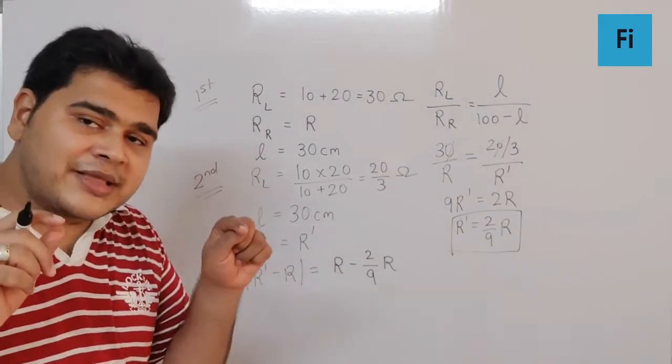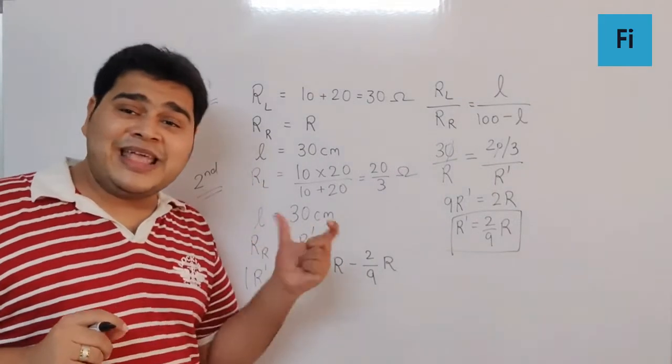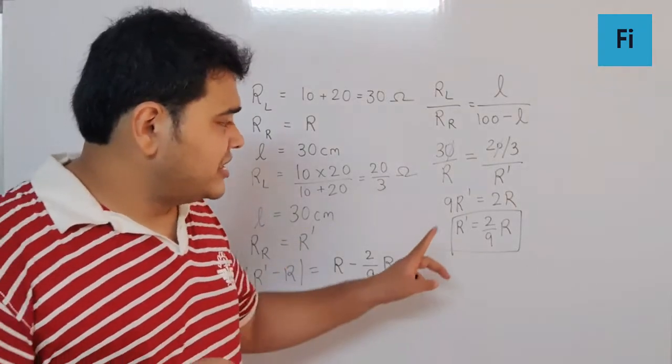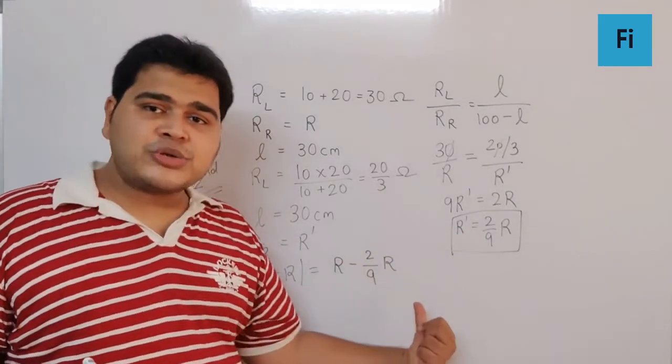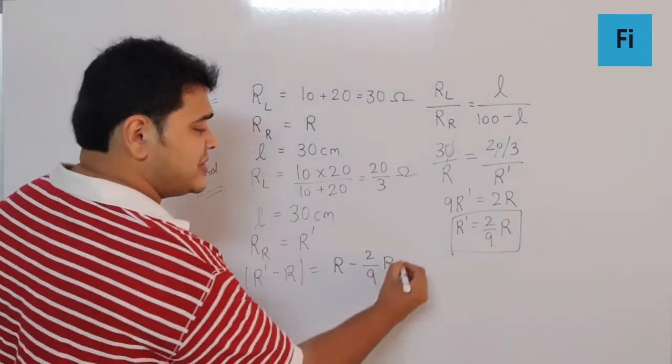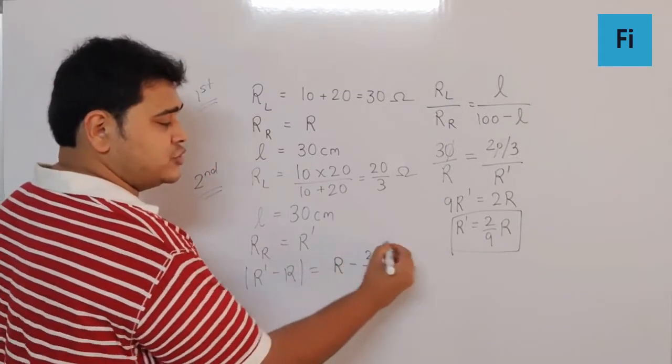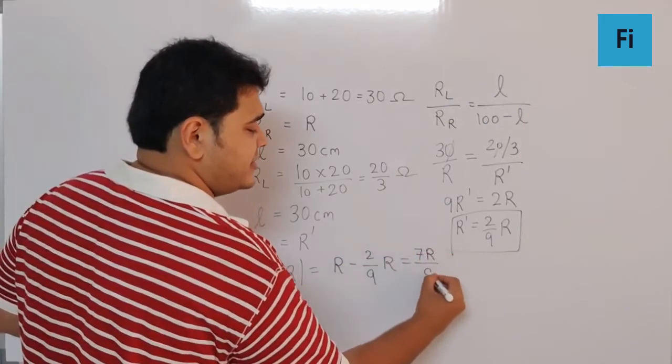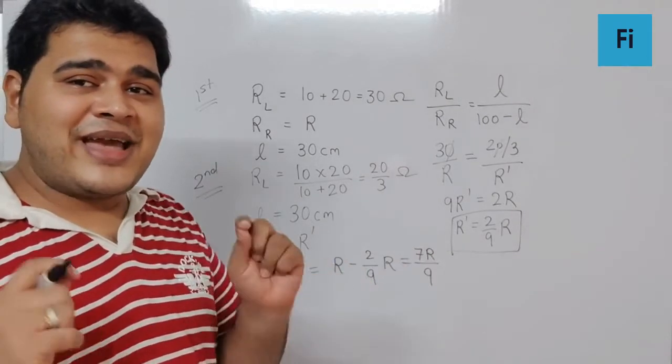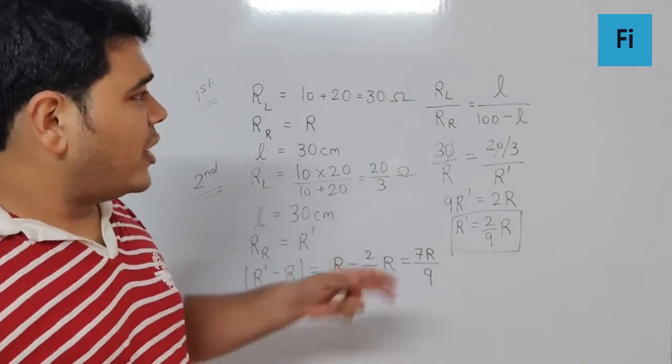So I won't get a negative sign. This gives 9 minus 2, which is 7R by 9. Now we need to find the value of R to get the exact answer. That's quite simple.